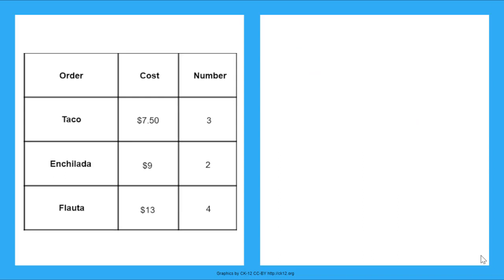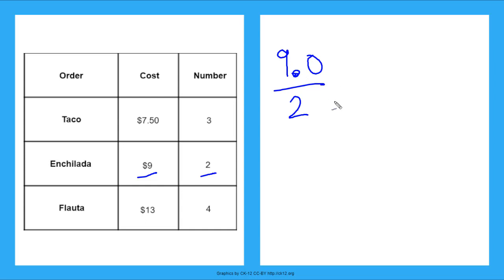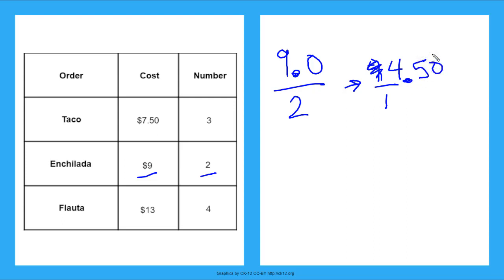Let's do the same thing for enchiladas. If I can get 2 enchiladas for the cost of $9, I get a rate of $9 per 2 enchiladas. Again, I need to divide my numerator and my denominator by the same number to get a 1 on the bottom. So if I divide by 2, I get a 1 on the bottom, and I also divide the $9 by 2 — so 9 divided by 2 gives me $4.50. That's $4.50 for every one enchilada.